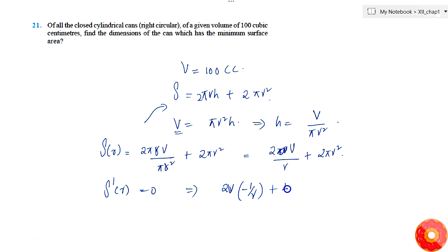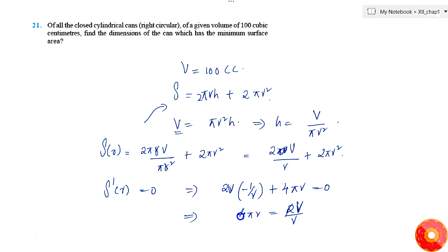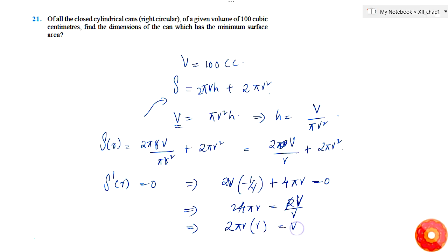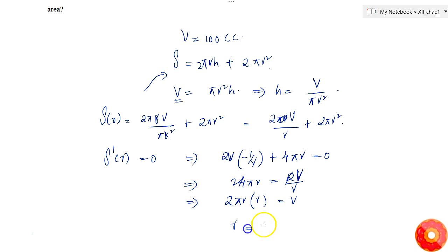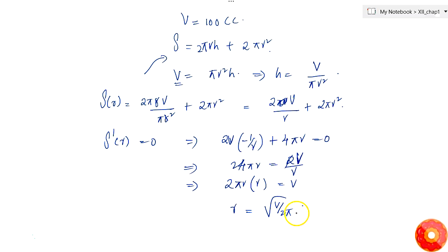Setting S'(r) = 0 gives 4πr = 2V/r², so 2πr³ = V. From this, r = √(V/(2π)) = √(100/(2π)) = 10/√(2π). This is the required radius of the can.